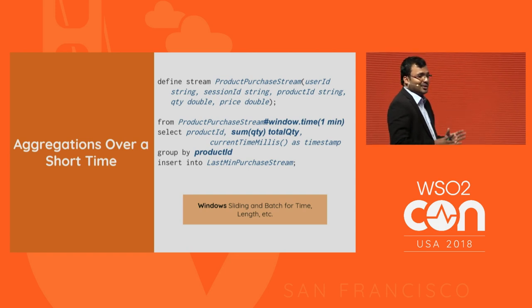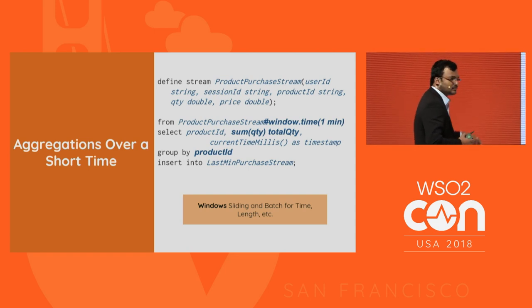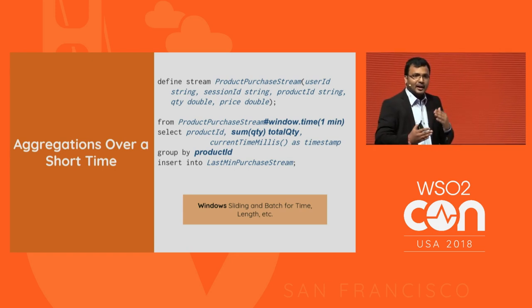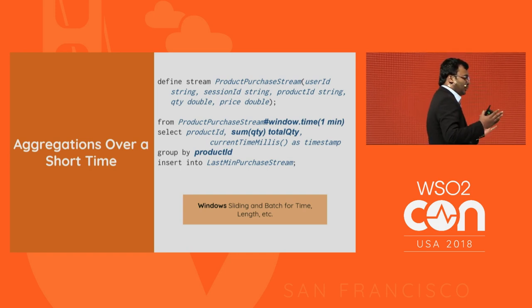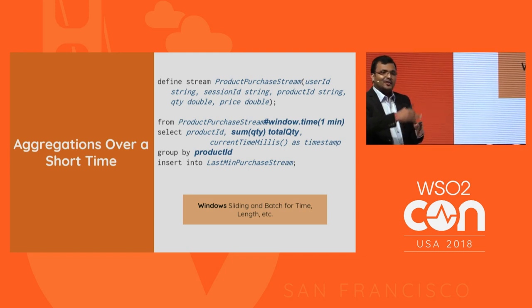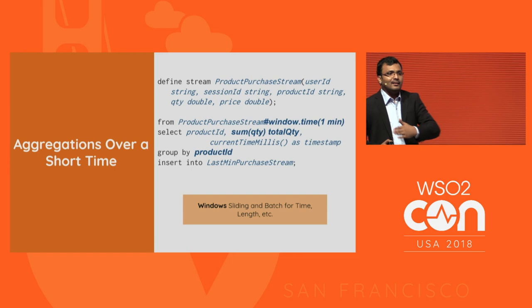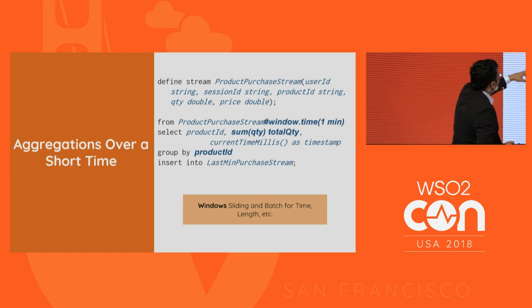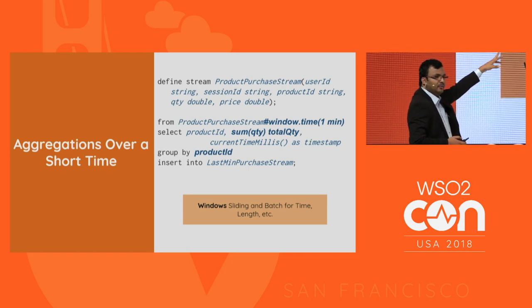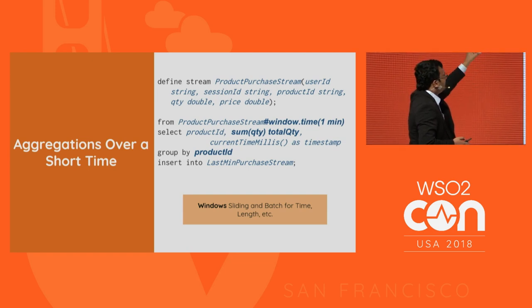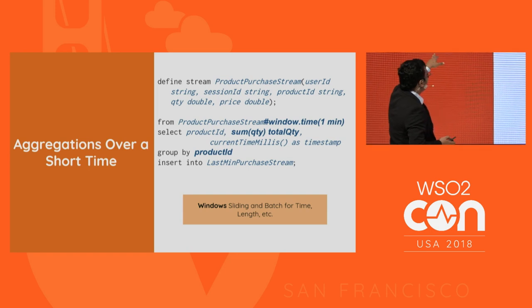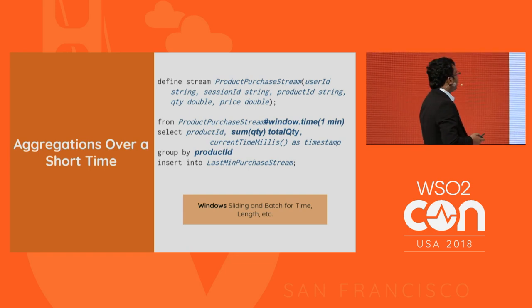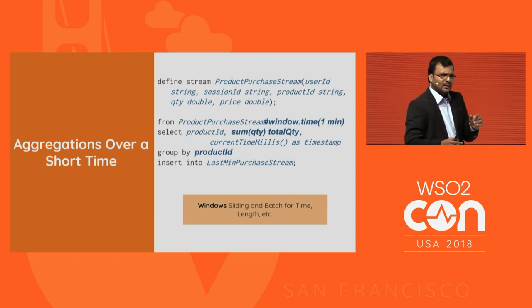Windows is a way of limiting or grouping incoming streaming events to work with them. There are two types: sliding windows and batch windows, and additional flavors like time, length, and unique. In this specific query, we send events to a time window of one minute, perform a sum on the quantity — resulting in total quantity — and group by product ID. The output is sent to a stream called last-minute purchase stream, performing a short-term aggregation over one minute.